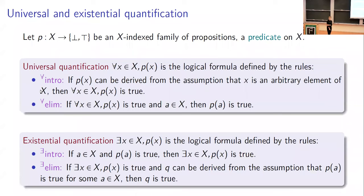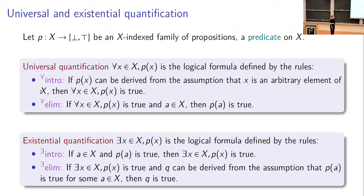A thing that certainly confuses students learning to prove theorems for the first time is how to use quantifiers correctly, both in statements and in proofs. They can be introduced similarly by rules. What the quantifier binds is a family of propositions — a predicate. For example, if X is the set of natural numbers, the predicate could be the statement that n is prime. Then the universal quantification for all x in X, P of x is true, has an introduction rule saying if you can prove P holds for an arbitrary element x of X, then for all x, P of x is true.